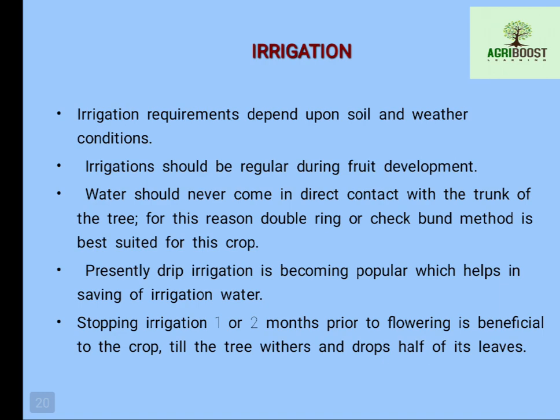Irrigation requirement depends on soil and weather condition. Irrigation should be regular during the fruit development stage. Water should never come in direct contact with the trunk of the tree, so the double ring method or check basin method is followed in citrus. Drip irrigation is also followed, which helps in saving irrigation water. Stopping irrigation one to two months prior to flowering is beneficial.